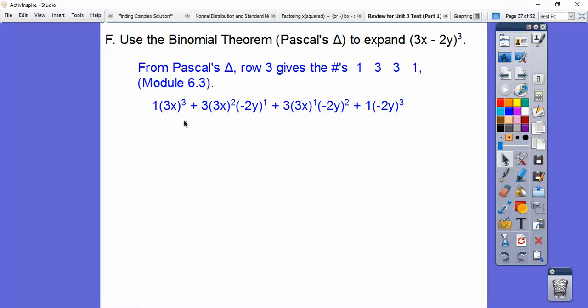This is 3. This is 3. So they're all 3s, and here's those 1, 3, 3, 1. We put the first one here to the third power, and then it decreases an exponent, and then you bring the next one into the picture. These got to add up to 3 right there. Then we decrease the 3x and increase the negative 2y. And then decrease the 3x, there would be 0 of them, and increase the negative 2y to the third. Now we've got to do all these exponents.